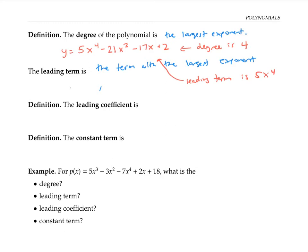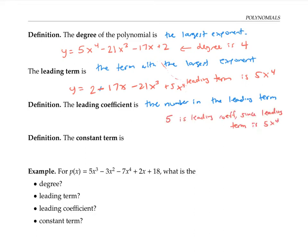If I wrote the same polynomial as y equals two minus 17x minus 21x cubed plus 5x to the fourth, the leading term would still be the 5x to the fourth, even though it was last. The leading coefficient is the number in the leading term — in this example, the leading coefficient is five. The constant term is the term with no x's in it; in our example, the constant term is two.